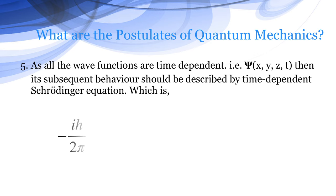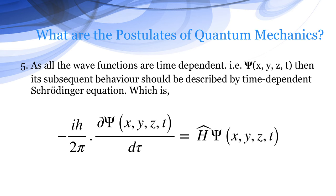which is minus ih by 2 pi into d psi x, y, z, t divided by d tau equals h overhead psi x, y, z, t where h overhead is known as Hamiltonian operator of the system.